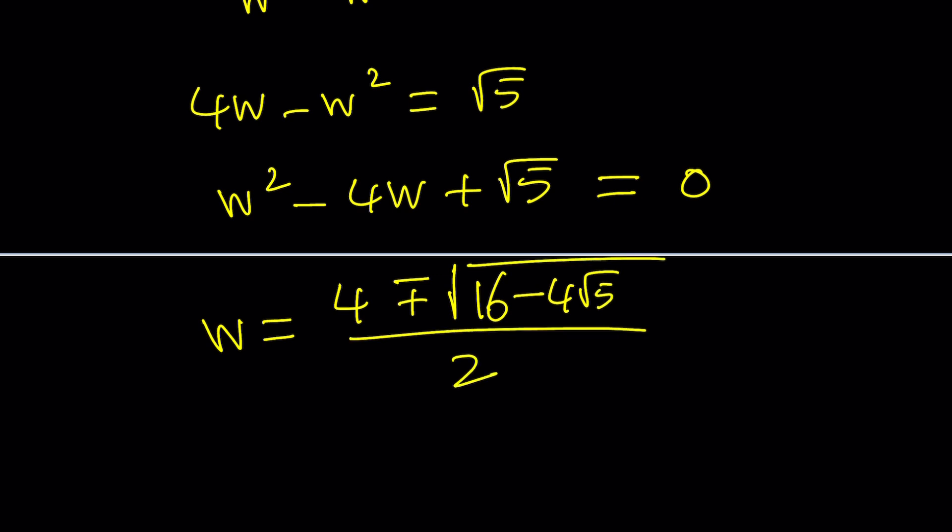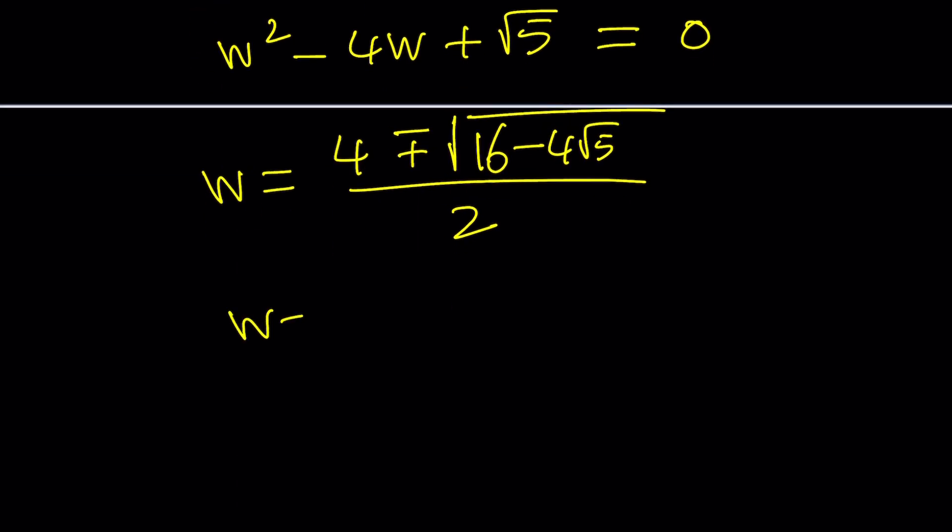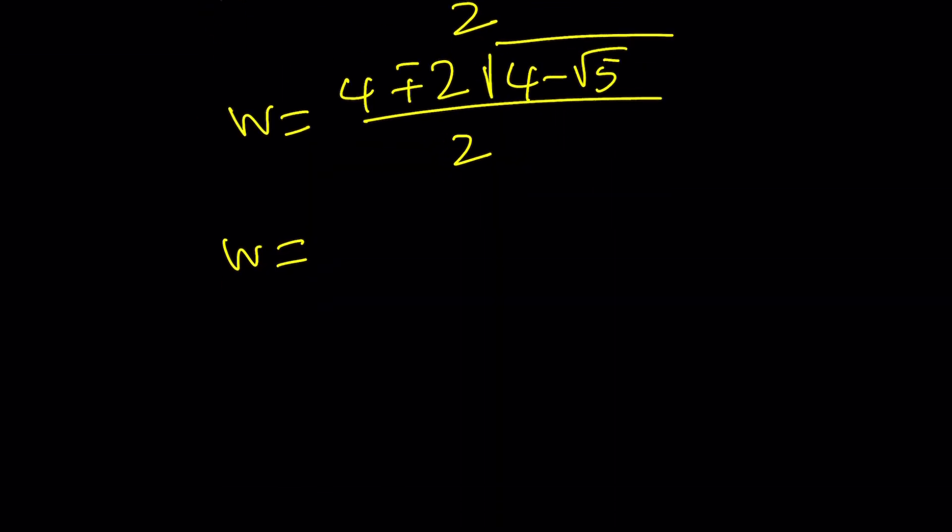Divide by 2. And again, we can take out a 4, and that will be a 2. And inside, we're going to have 4 - √5. And one more time, if you divide everything by 2, you get 2 ± √(4 - √5).